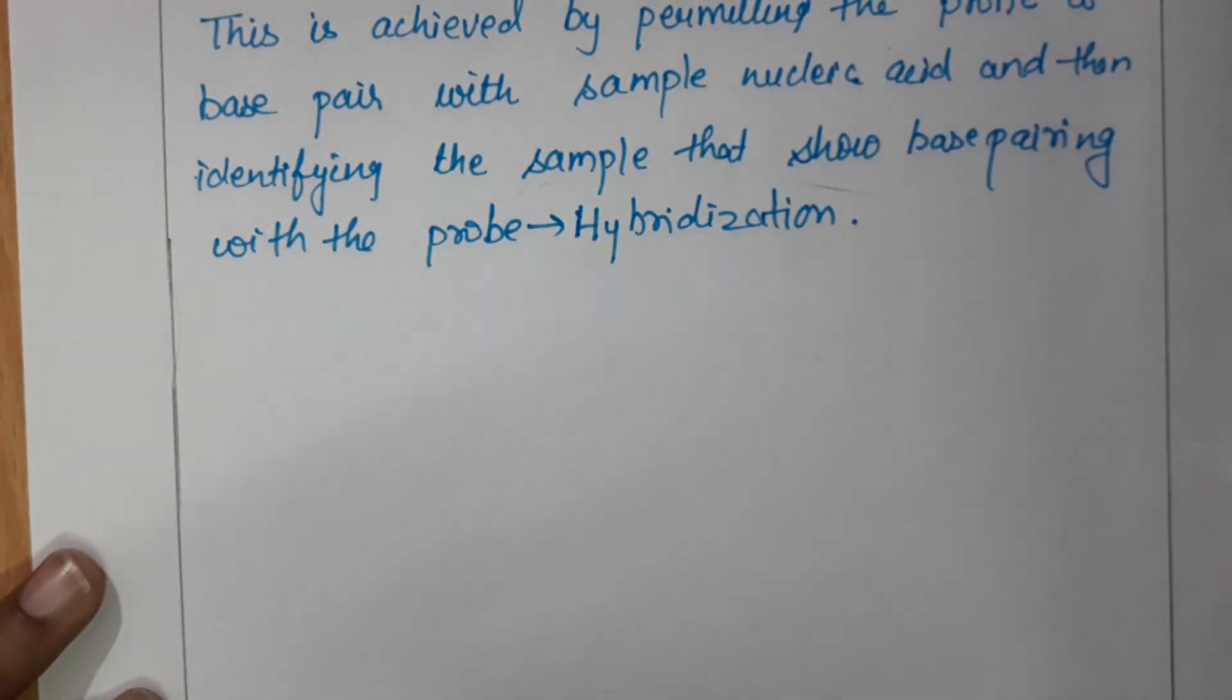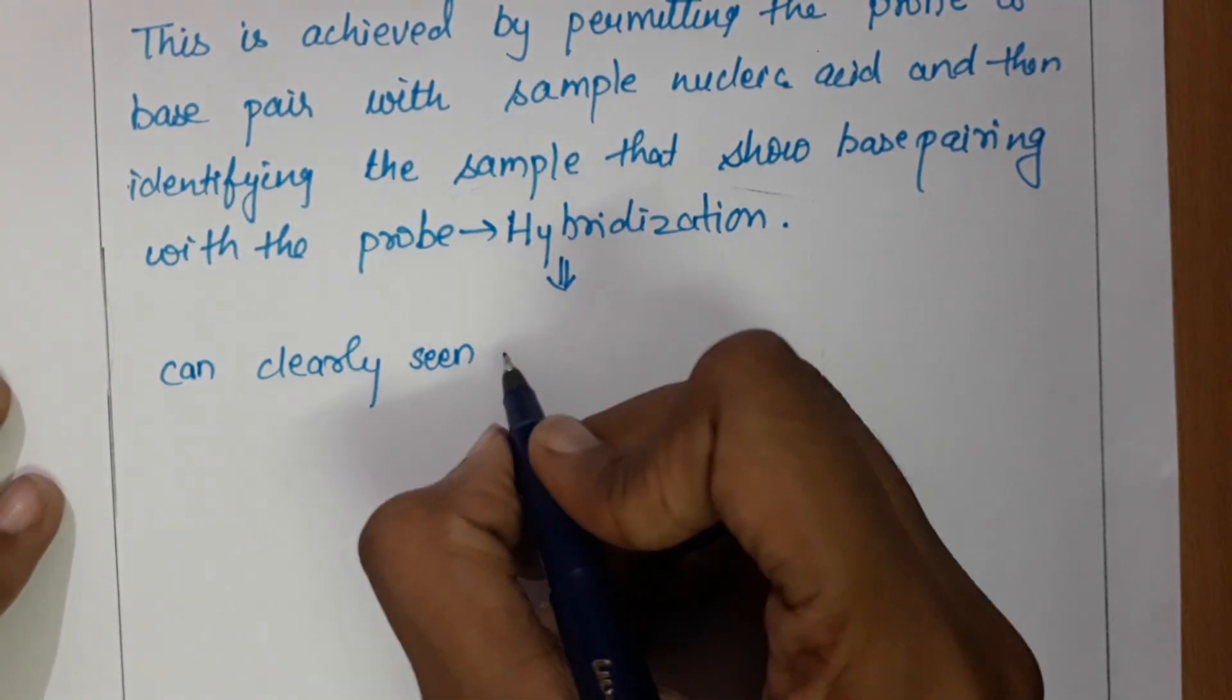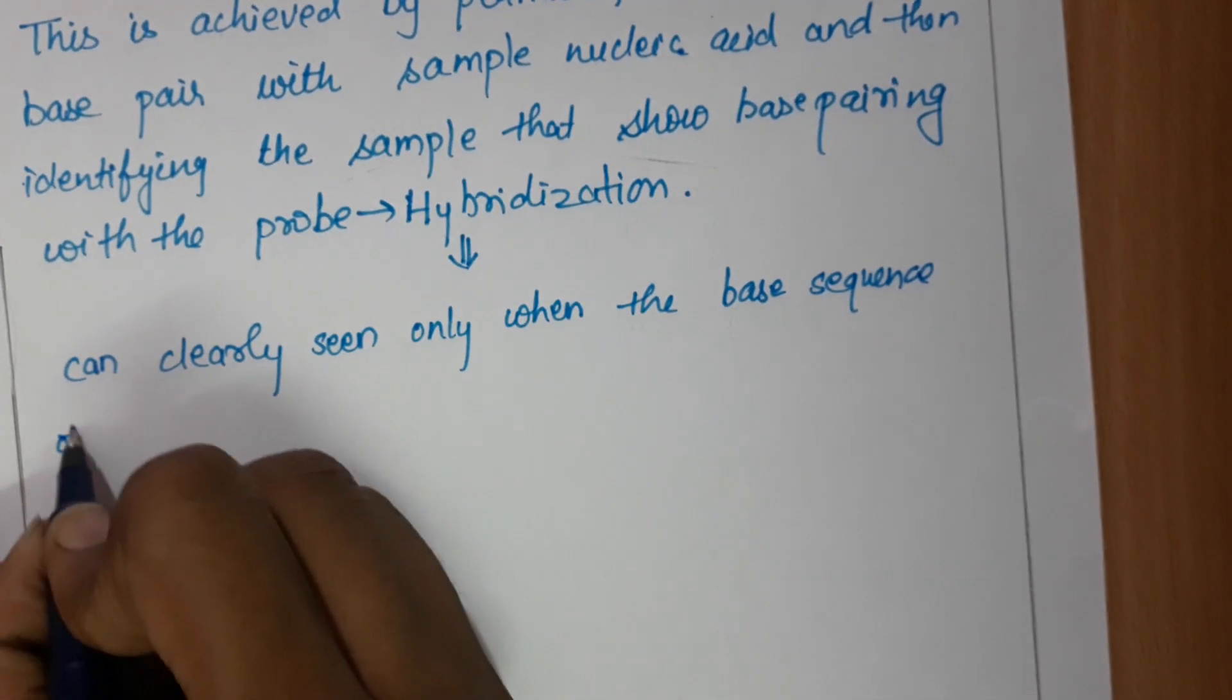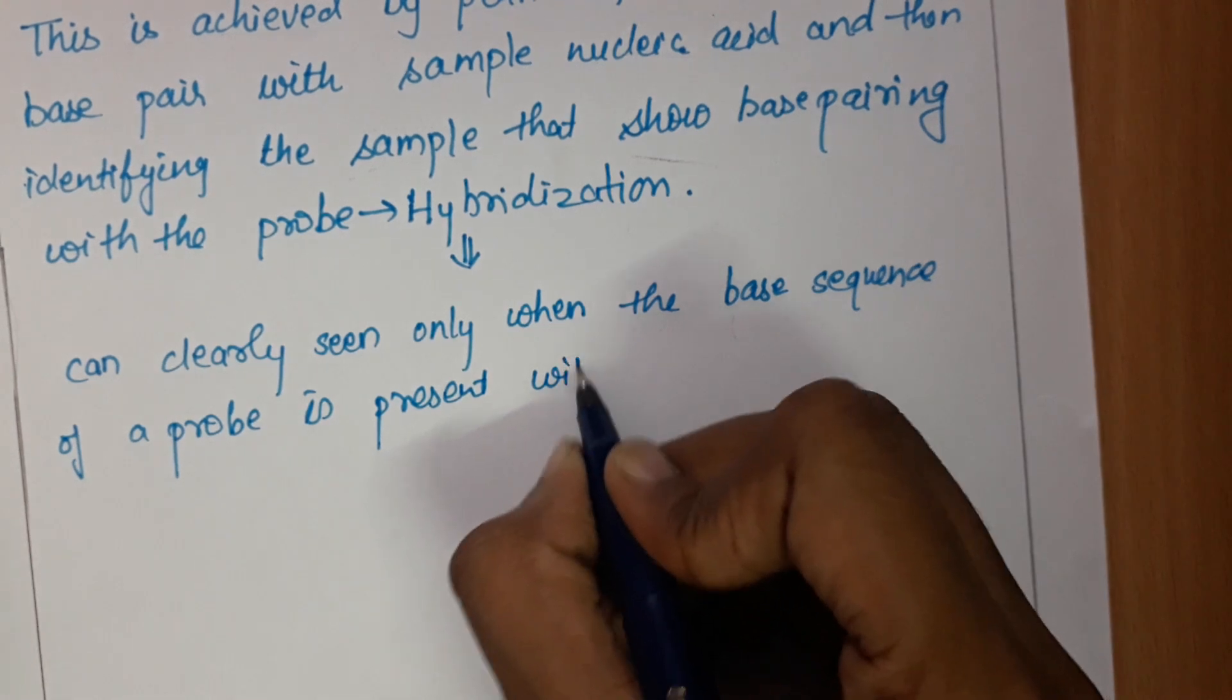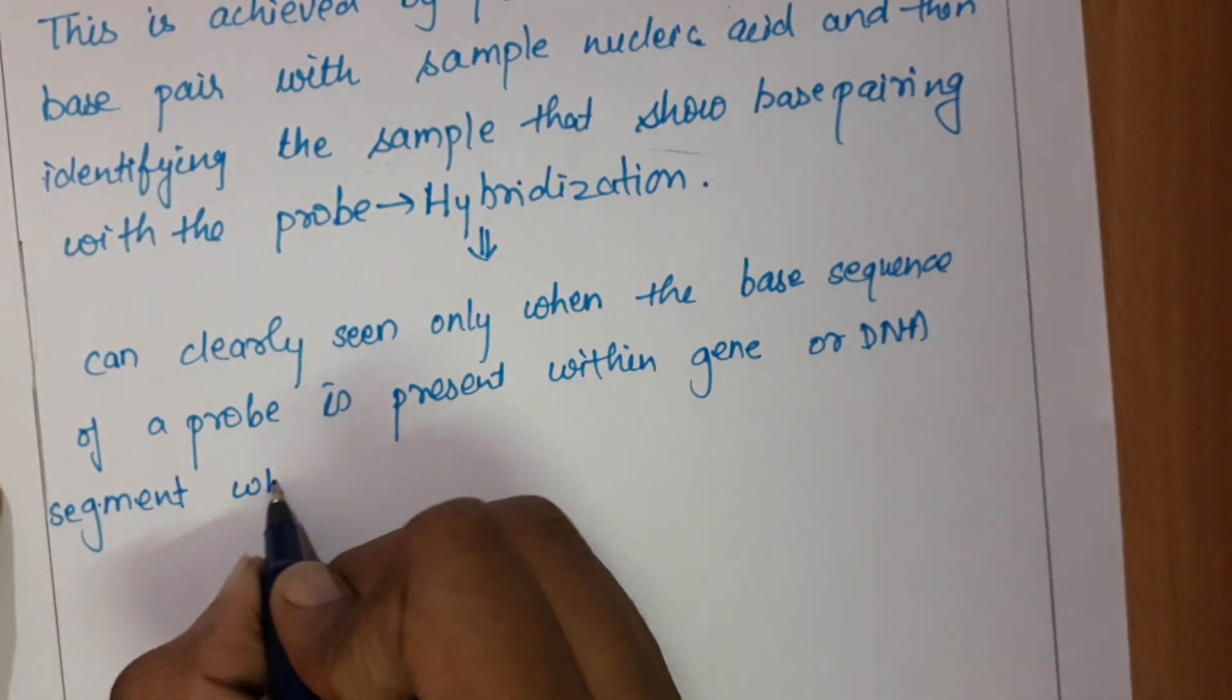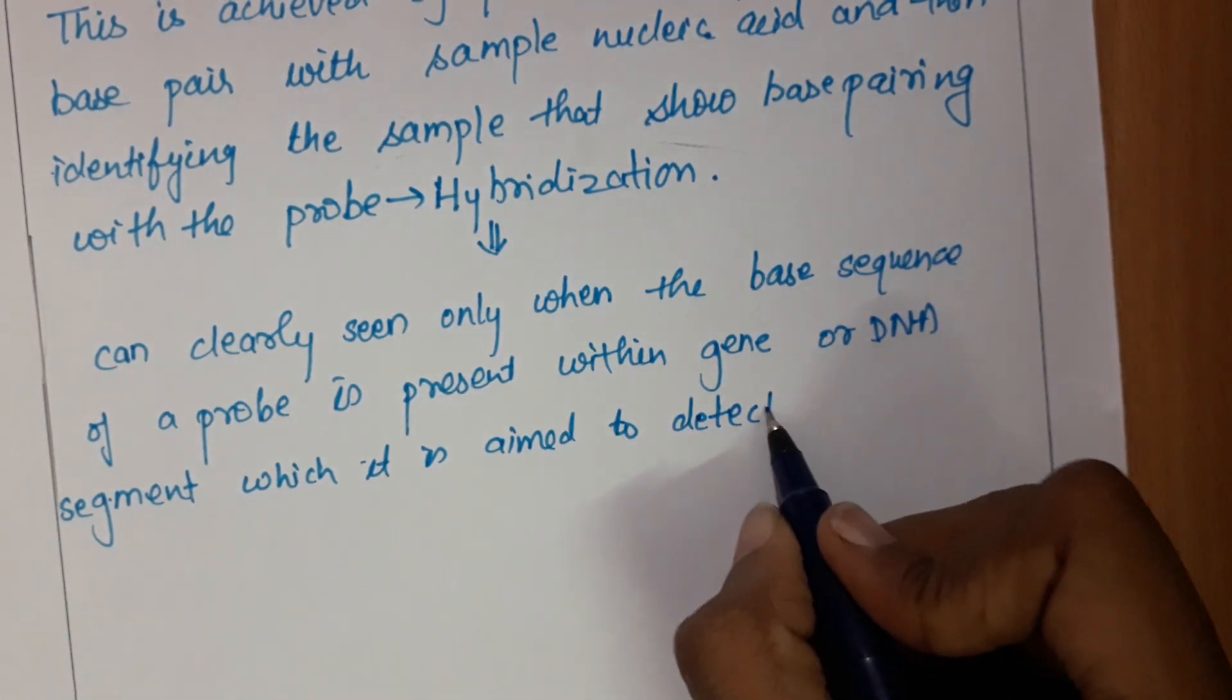This hybridization can clearly be seen only when the base sequence of a probe is present within the gene or DNA segment.